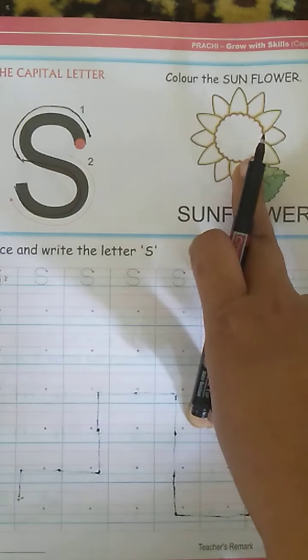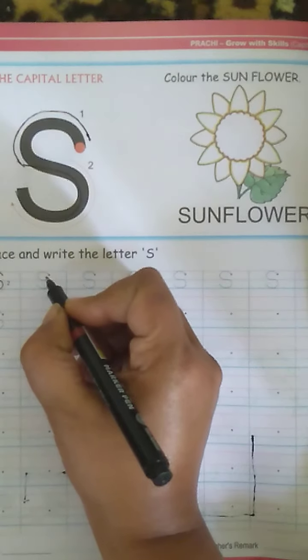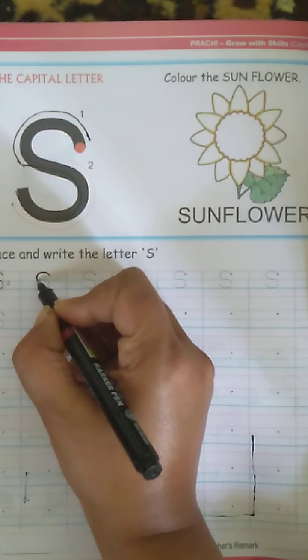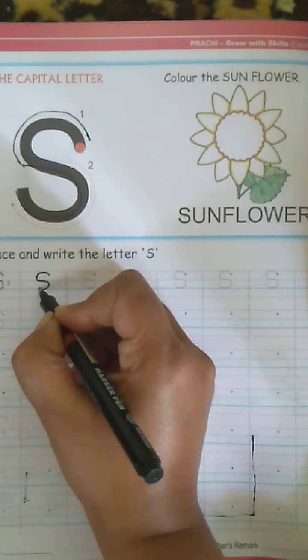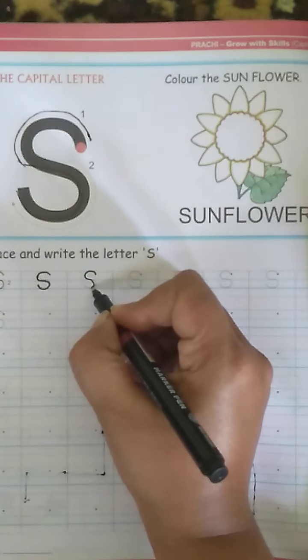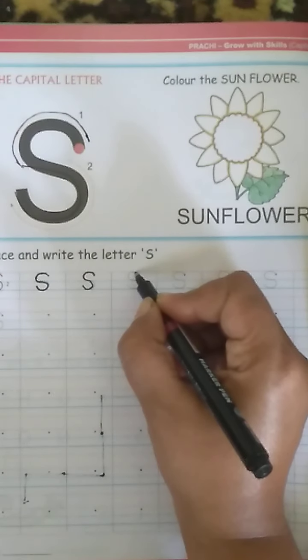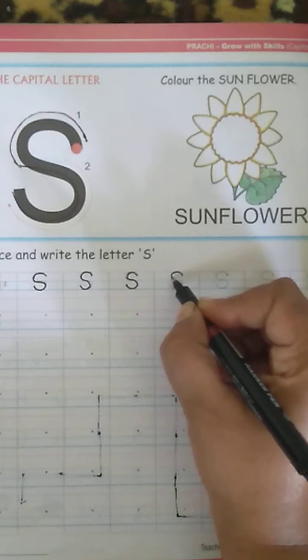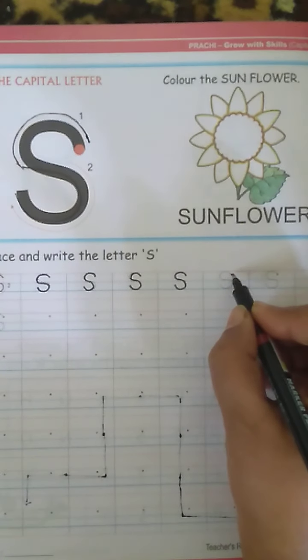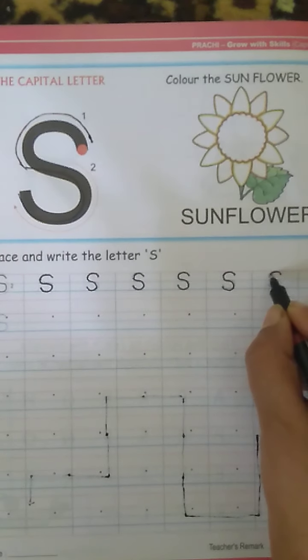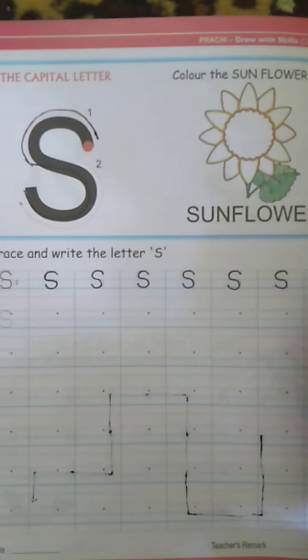You will color this sunflower. Now, trace along the dotted lines. Start from the red black dot and make a curve like this. S. S for sunflower. S for snake. S for socks. S for soup. There are so many words that start with the letter S.